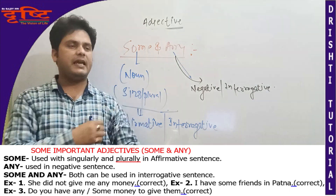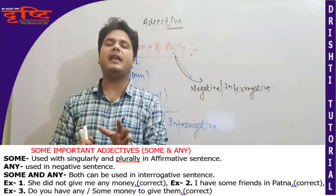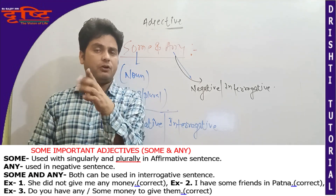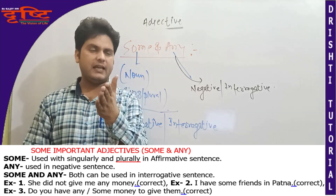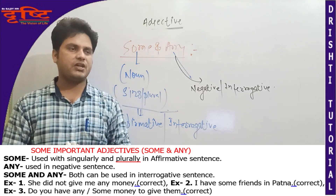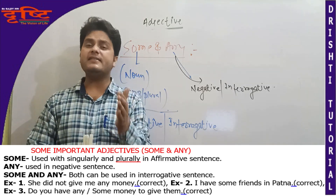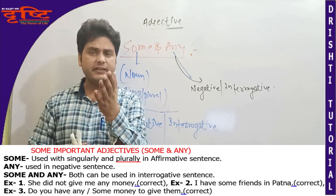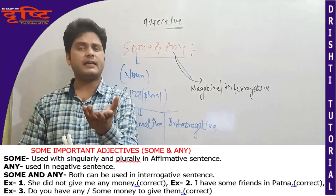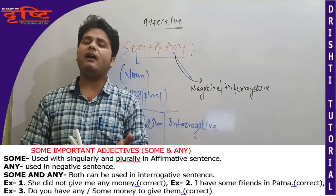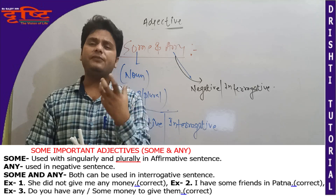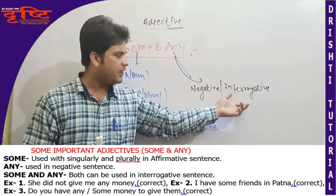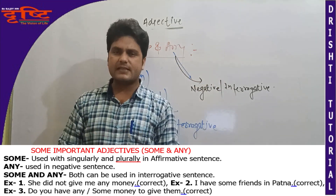Example one: 'She did not give me any money' — usne mujhe ek bhi rupaya nahi di. Sentence negative hai isliye 'any' lagaya — correct hai. Example two: 'I have some friends in Patna' — sentence positive hai, friends countable hai, isliye 'some' — correct. Example three: 'Do you have any obligation money to give me?' Interrogative part mein some bhi le sakte hain aur any bhi le sakte hain — depend karta hai situation par.